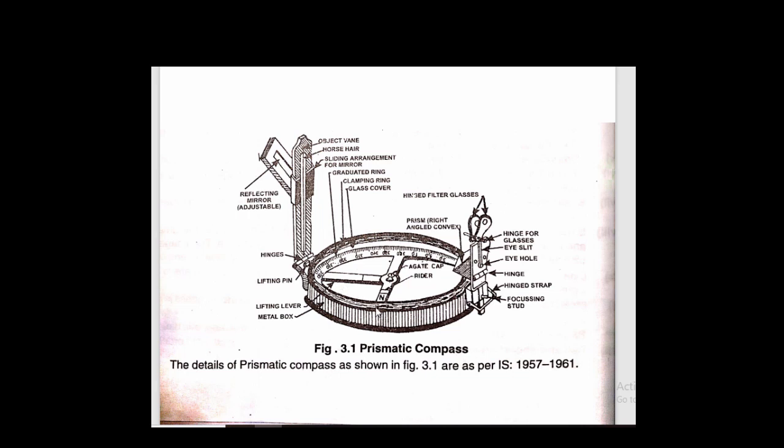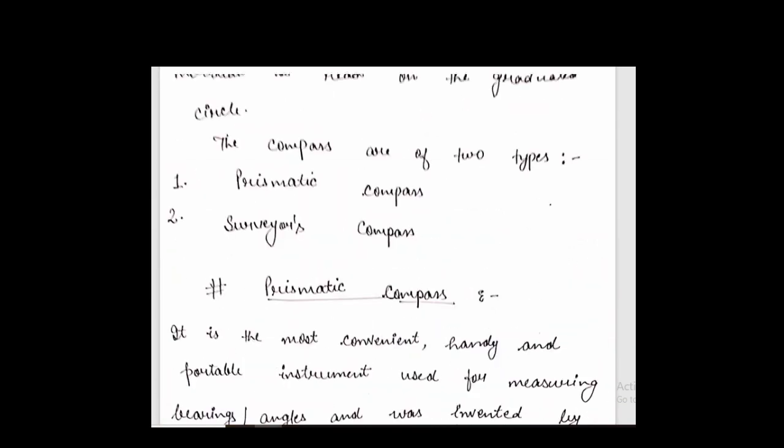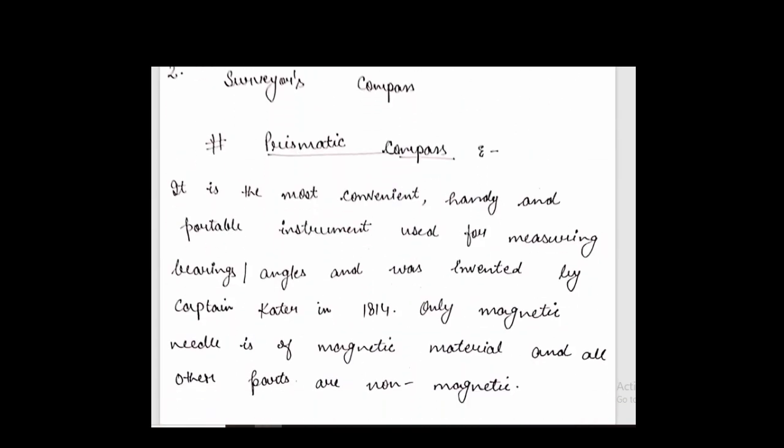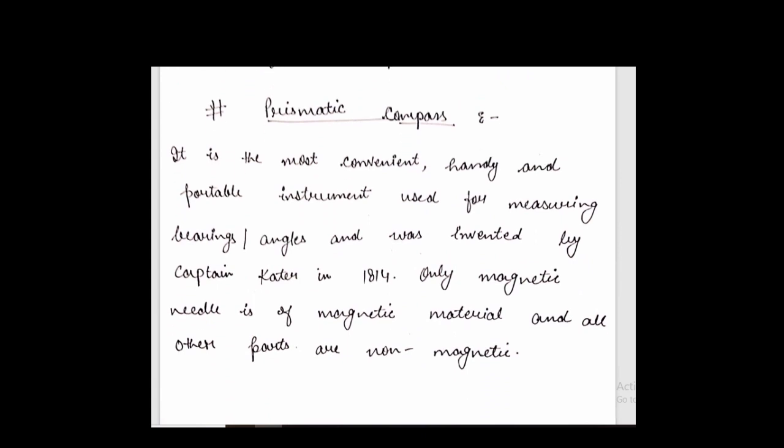After marking the direction of the north, we look at the compass. So prismatic compass is a convenient, handy portable instrument used for measuring bearing angles. This was used in 1814. This instrument is which we mark angles and bearing angles.